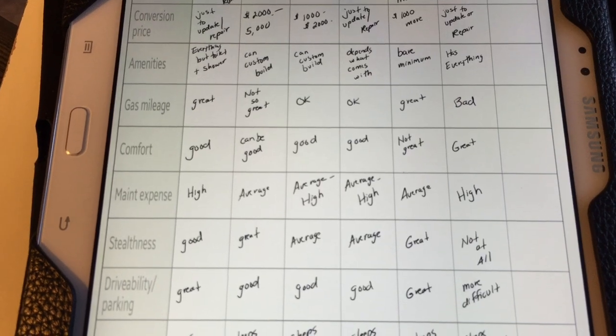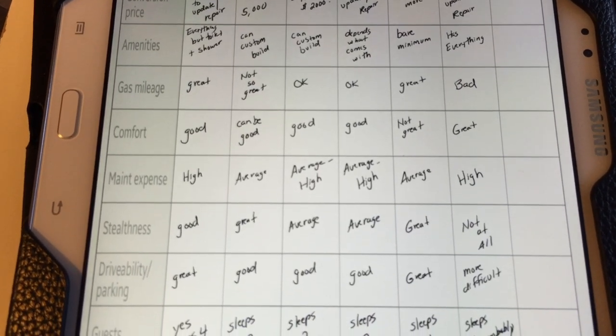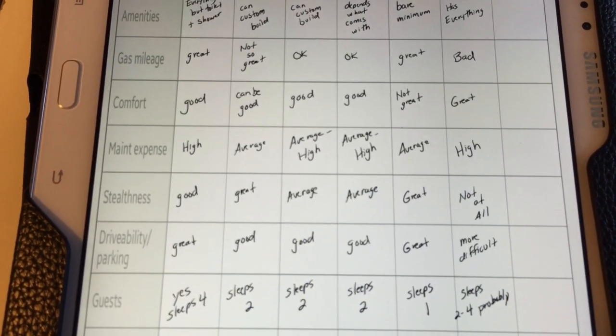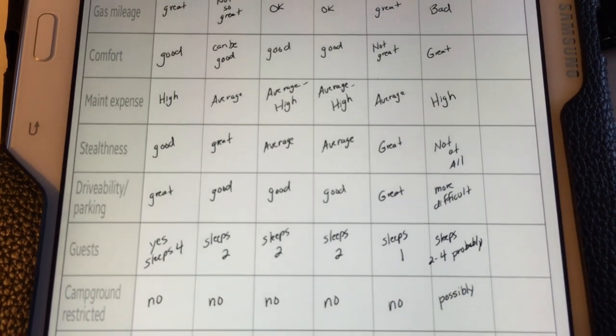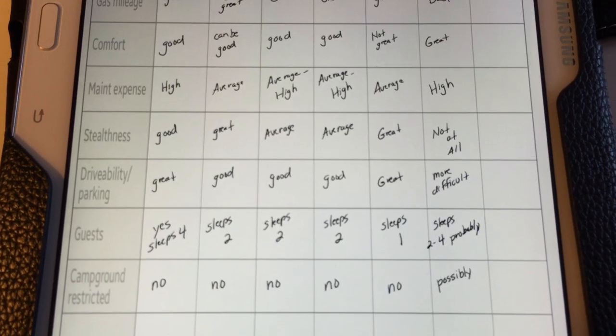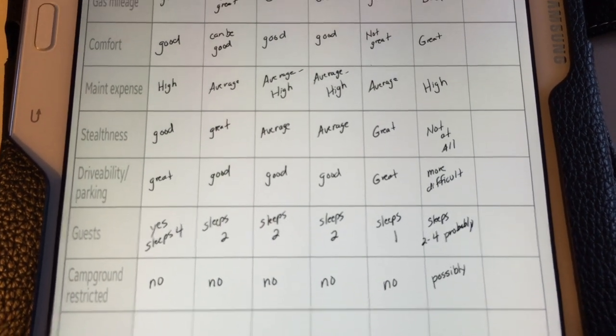So under my minivan, I put the stealth. This was great. Drivability parking. And guess how many people it sleeps. And campground restricted.